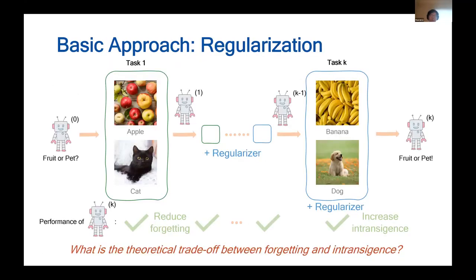Intuitively speaking, when we have a CL problem and we have a very large regularizer or very strong regularization on previous tasks, it is very common that we simply do not learn anything on later tasks. This phenomenon of not being able to learn new tasks, or the inability to learn, is sometimes referred to in the literature as intransience.